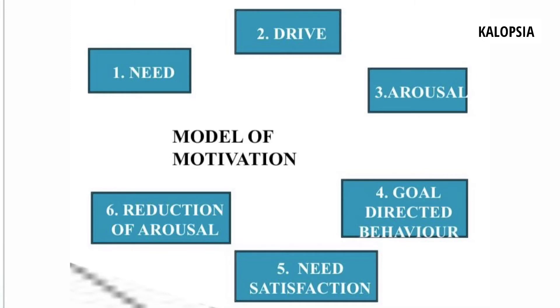The next thing we are going to discuss is the model of motivation, which is a six-stage model. The stages are: need, drive, arousal, goal-directed behavior, need satisfaction, and reduction of arousal. For example, with food: when we feel hungry we have a need; that need produces a drive and arousal to search for food; arousal leads to goal-directed behavior such as buying food; once we eat, need satisfaction is achieved, which leads to reduction of arousal. This is how the model functions.